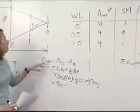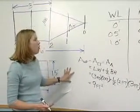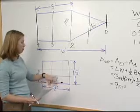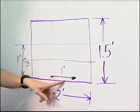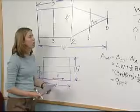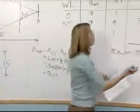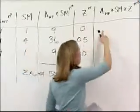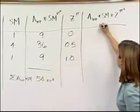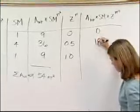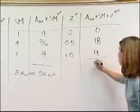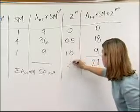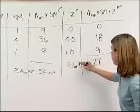Now we need to calculate the vertical center of buoyancy. The next thing we need are the Z values. The Z value is the distance from the baseline up to the specified water line. So for the 0-foot water line, Z equals 0; for the half-foot water line, Z equals 0.5 feet; and for the 1-foot water line, Z equals 1 foot. Multiplying across: 9 times 0 is 0, the next value is 18, and the last is 9. Totaling these gives 27 cubic feet — the summation of water plane area times Simpson's multiplier times Z.